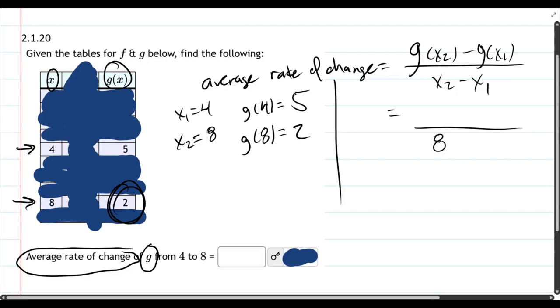So x₂ is 8, x₁ is 4, and in the numerator, g(8) is 2 minus g(4) is 5.